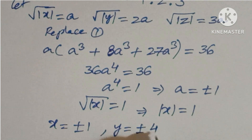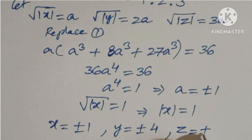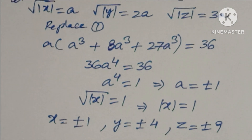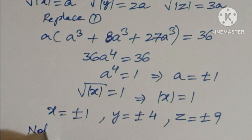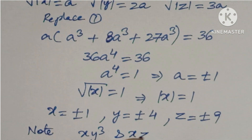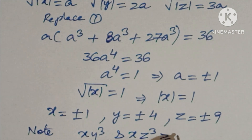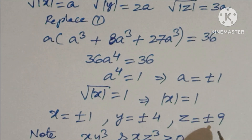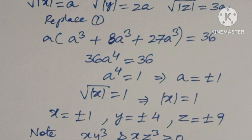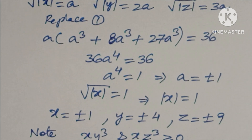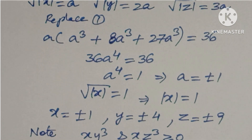Similarly, y = ±4 and z = ±9. However, we must note that the terms xy³ and xz³ in the first equation must be greater than or equal to zero, so not all sign combinations are valid. This leaves only two solutions.